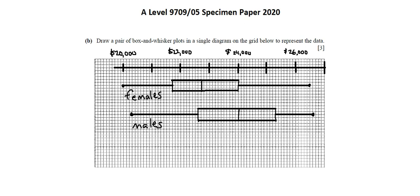and Q3 in the box. And the whiskers are at the low end, 20,300, and at the high end, 26,600. And this completes the requirements for 9709 Specimen Paper 5, Question 1.